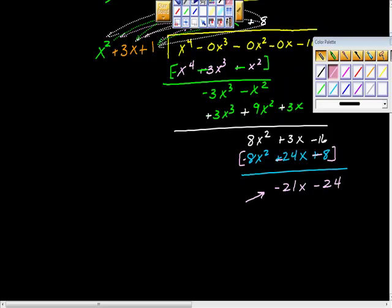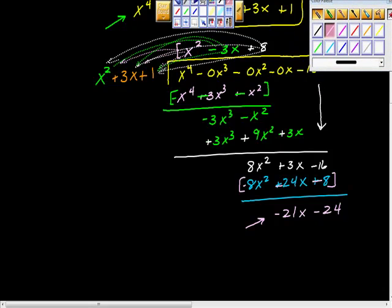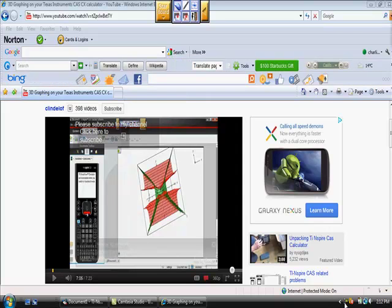So our remainder... So here's our answer right here. This is our answer up here, with the remainder of negative 21x minus 24. What I'd like you to think about tonight as you're doing this: what is 15 divided by 2? 7 and a half. How do you get 7 and a half? Where does the half come from? That's right. So the one half comes from... This is the 1 here, and this is the 2. So how do you think this plays out? Looking forward to your comments. Something nice.